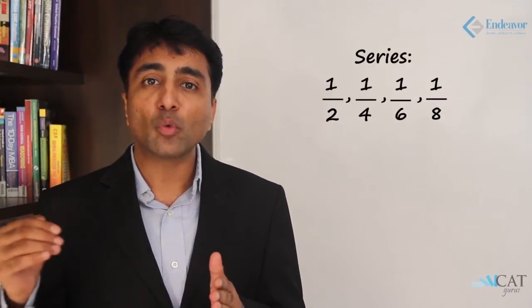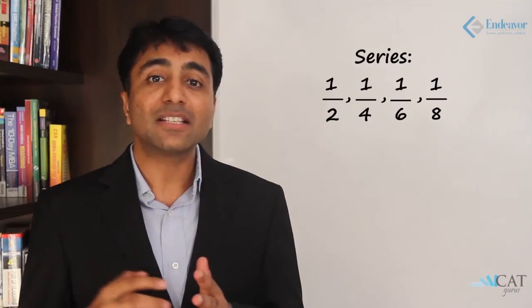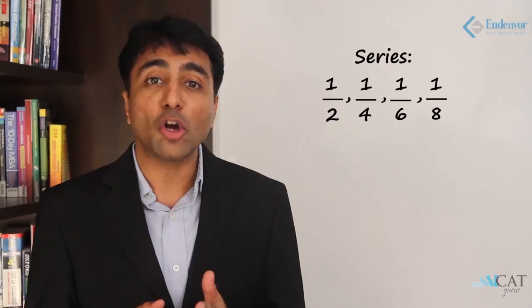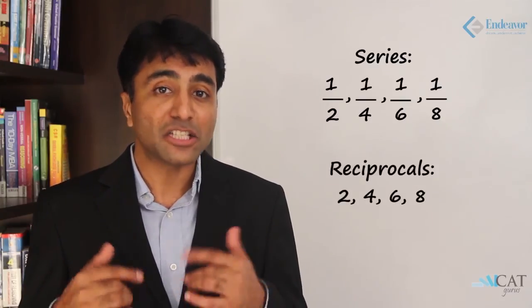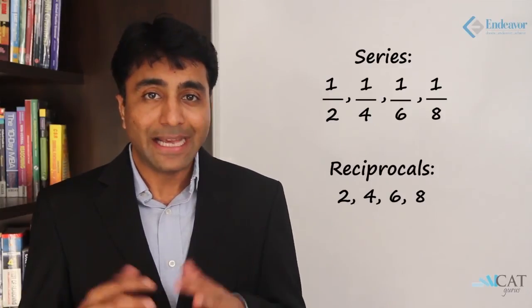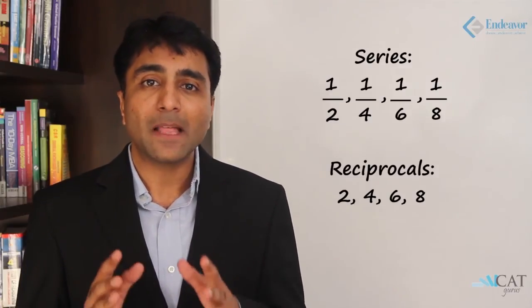The third type of progression is harmonic progression. When a series is such that its reciprocal forms an arithmetic progression, then the series is known as harmonic progression. For example, 1/2, 1/4, 1/6, 1/8 — these terms have neither a common difference nor a common ratio, but their reciprocals 2, 4, 6, 8 form an arithmetic progression, making this a harmonic progression.